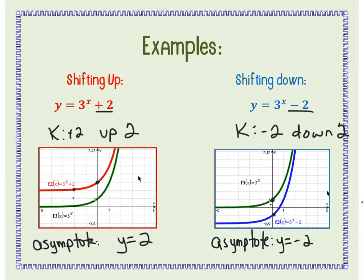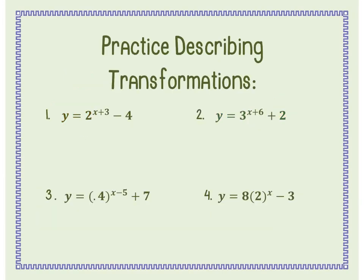Let's look at some equations and identify transformations. For 2 to the (x plus 3) minus 4: the plus 3 is with the x, so it's the h value. H is always the opposite of what you see, so h is negative 3 and the graph goes to the left 3. The k value is negative 4, so the graph goes down 4.